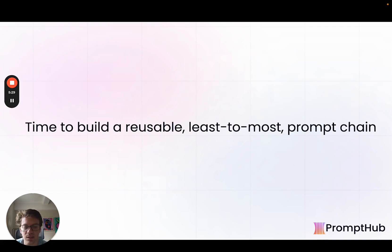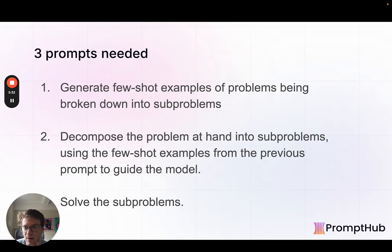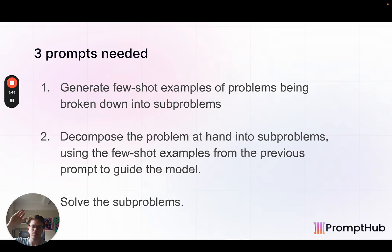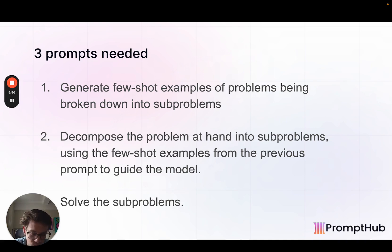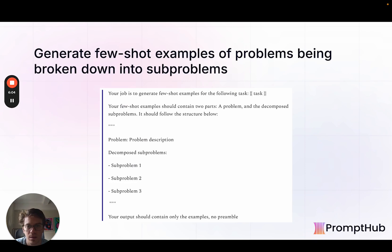That's the research — let's look at how we can actually use this. We're going to write three prompts: one to generate few-shot examples of related or similar problems being broken down into subproblems; that's the first step where we show the model another similar problem and its subproblems. Once we have those few-shot examples, we'll move on to having the model decompose the prompt, and then we'll solve the subproblems. We'll look at the prompts here, and then look at how you can actually implement this.